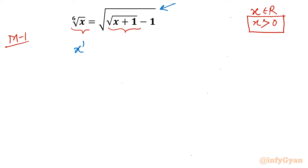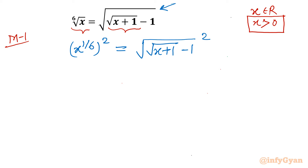So I will write x to the power 1 by 6, whole squared, equal to (square root of (square root of (x plus 1)) minus 1) whole squared. The square root and square cancel on the right hand side. Left hand side becomes the cube root of x. Right hand side we get square root of (x plus 1) minus 1.